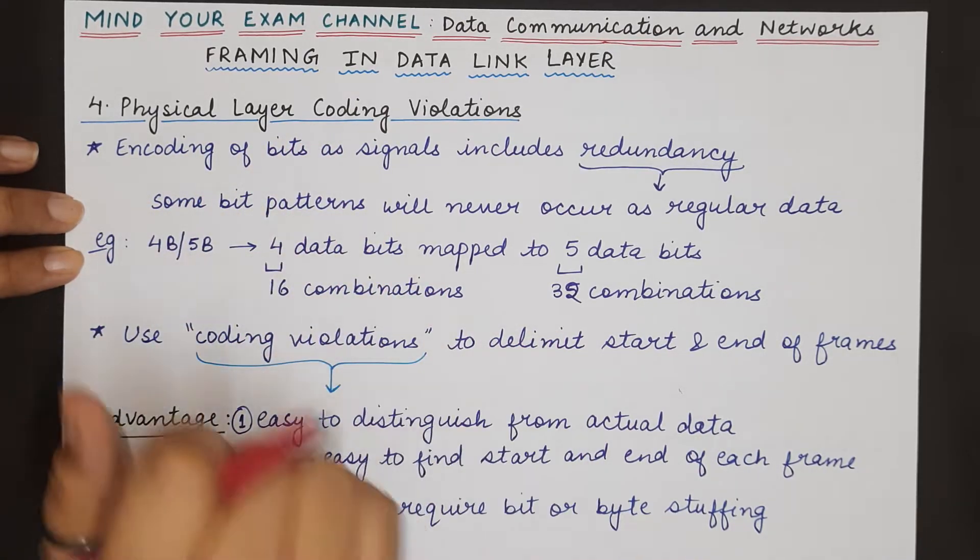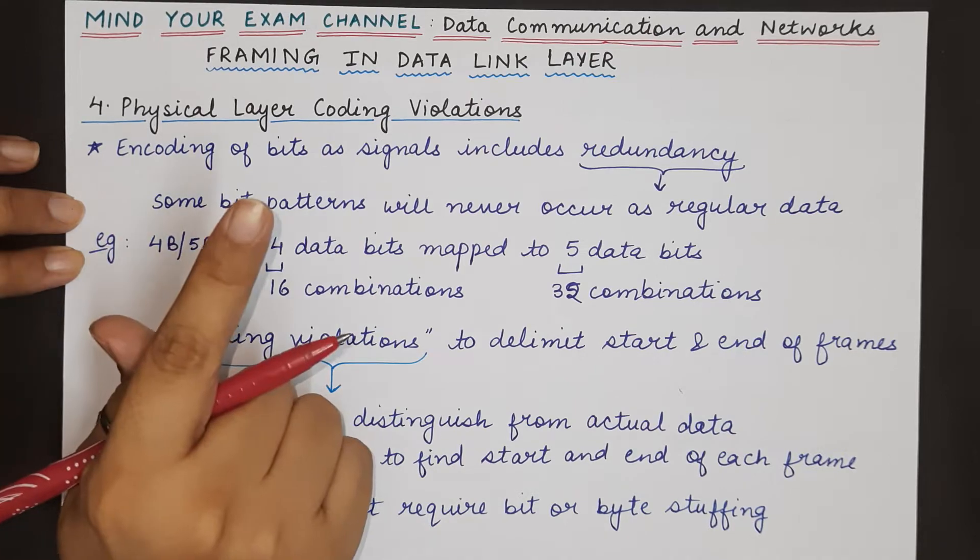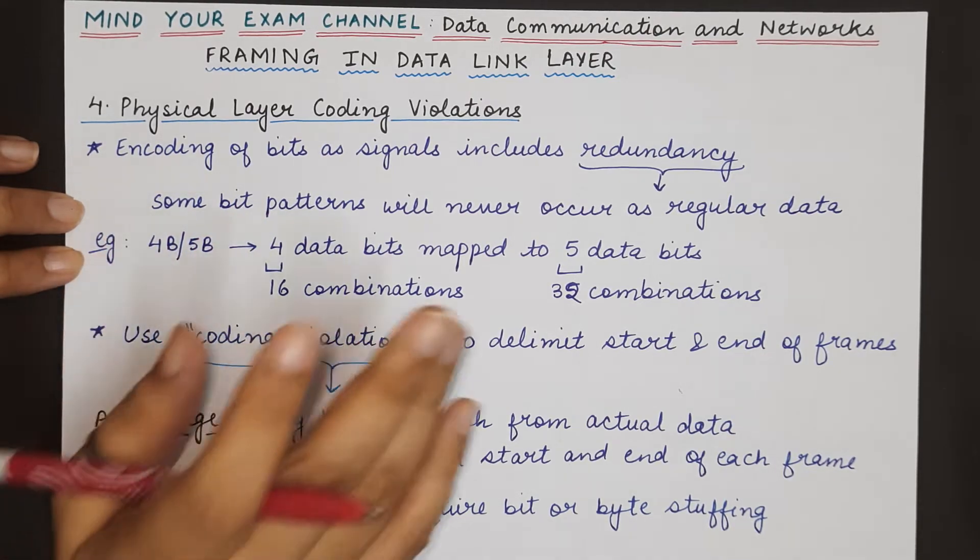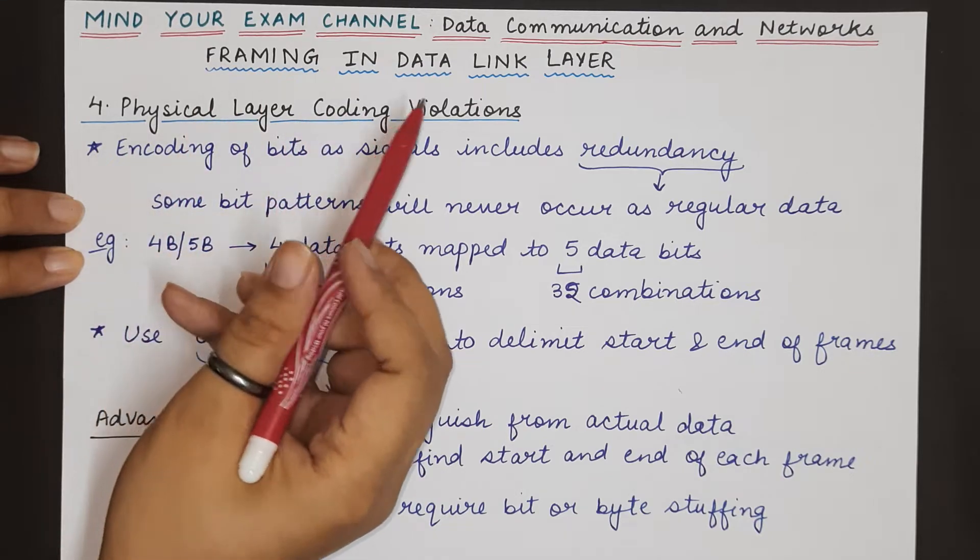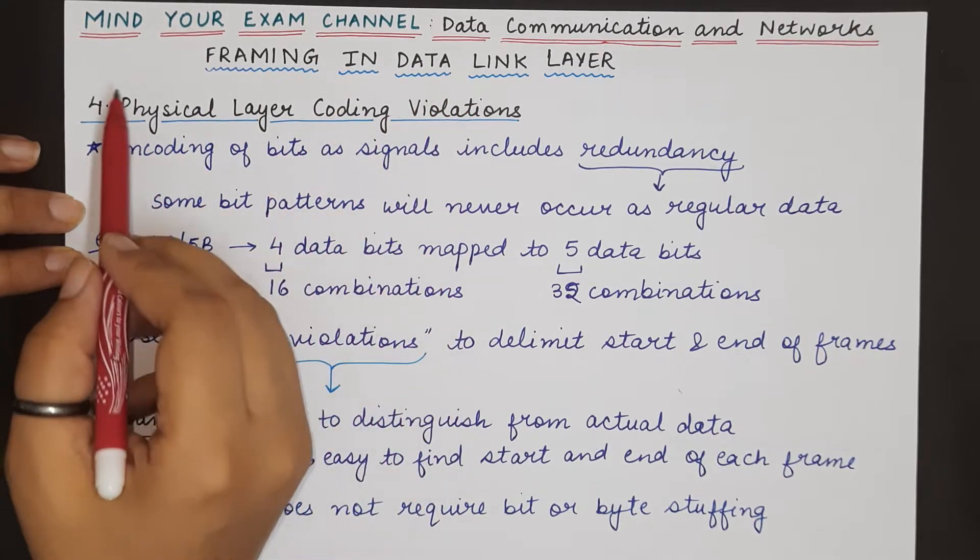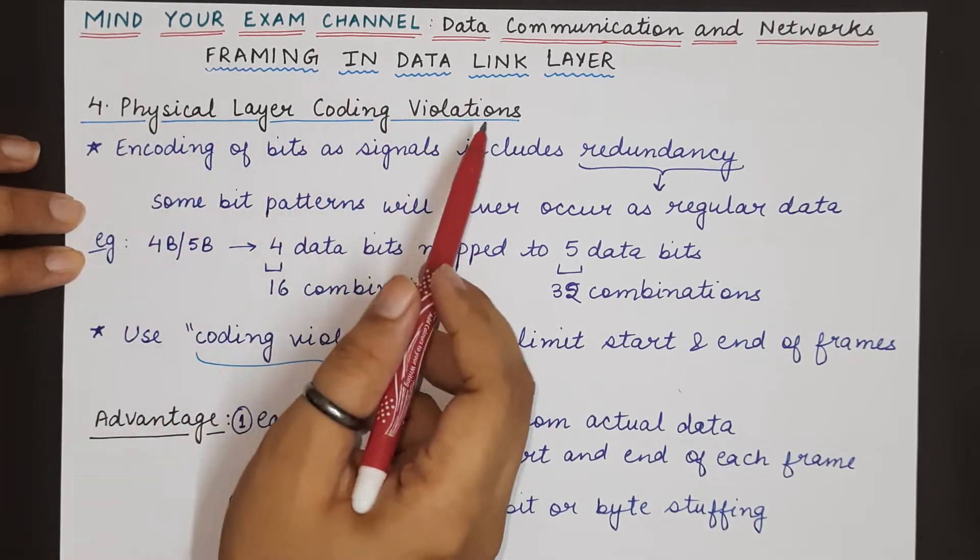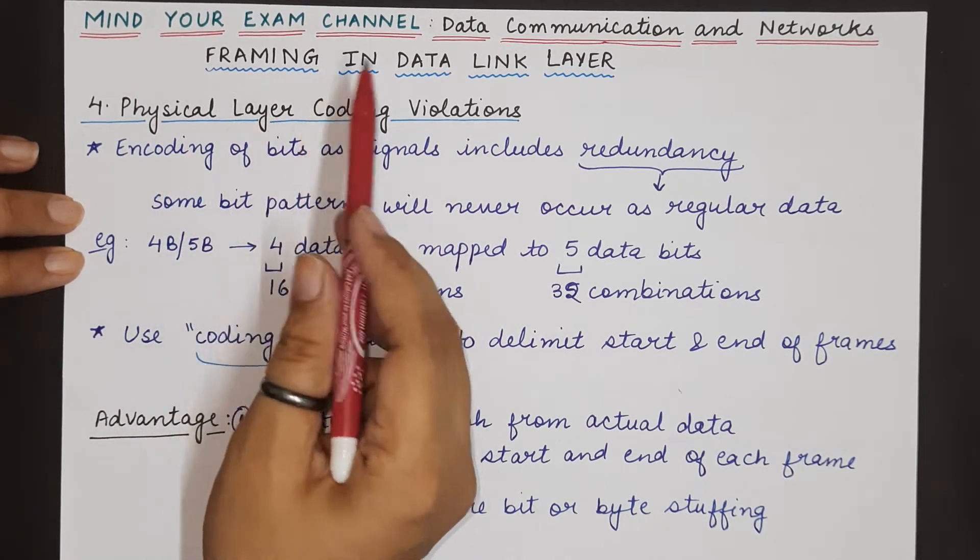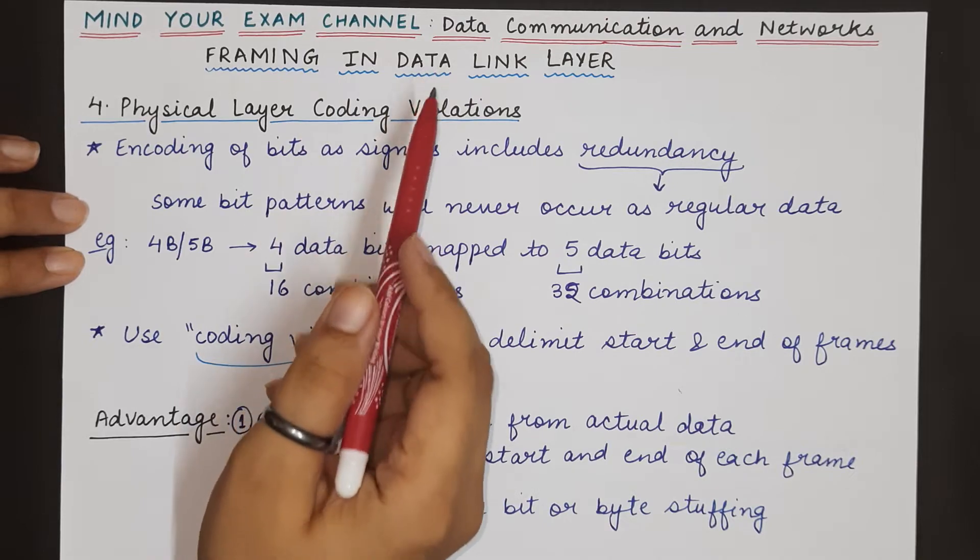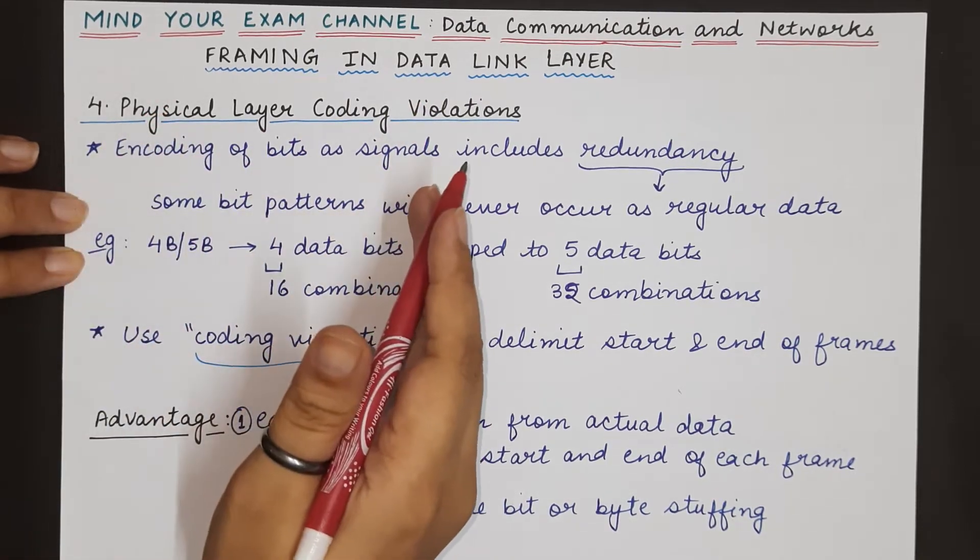In the previous three videos we have seen three different techniques, namely bit stuffing, byte stuffing with flag byte, and the first one was byte count. Now is the turn for physical layer coding violations. How do we use the coding violations that were present at the physical layer to perform framing in the data link layer?